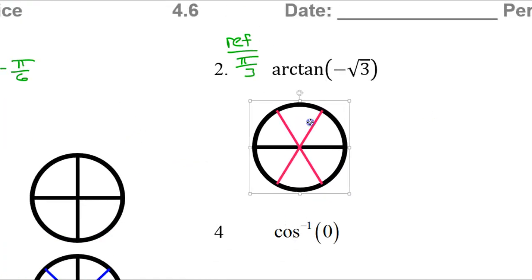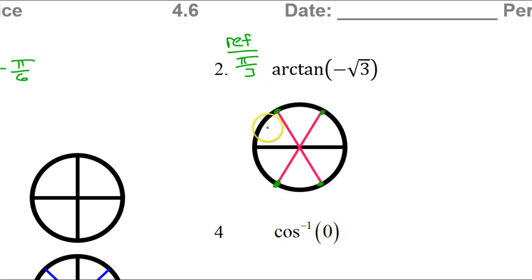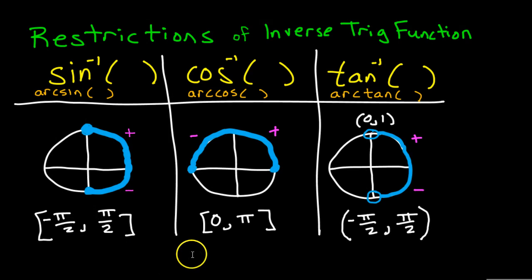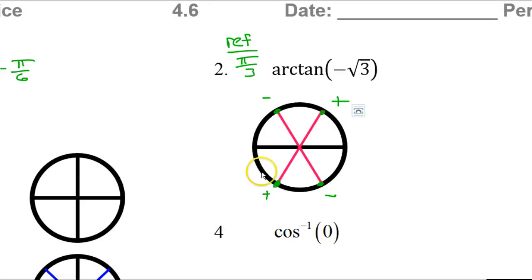Here's a unit circle with a bunch of pi over 3's on it. These are the four angles that have a reference angle of pi over 3. Tangent is positive here and here. Tangent is negative here and here. Once again, tangent is only defined on the right-hand side of the circle.